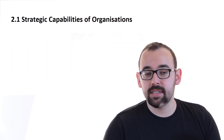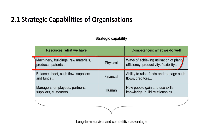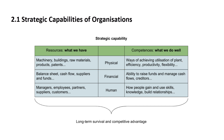Let's look at some examples. I'll bring three examples of strategic capabilities: physical, financial, and human. For physical resources, we have machinery, buildings, raw materials, products, and patents. The corresponding competencies involve achieving utilization of plant, efficiency, productivity, and flexibility — this is about whether we do it well.